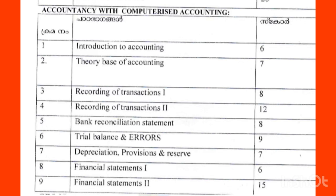Then, financial statement 1 — 6 marks. Financial statement 2 — 15 marks. We will predict that in the next chapter, and also in the last chapter covering financial statements 1 and 2.